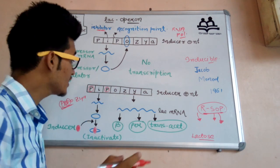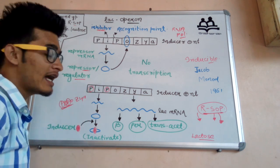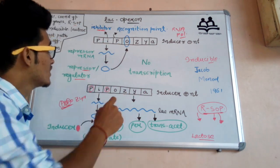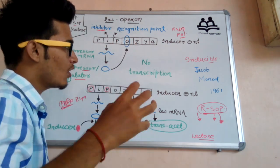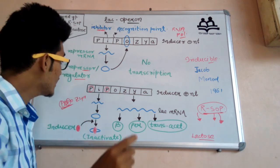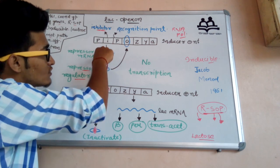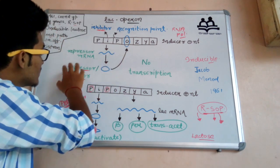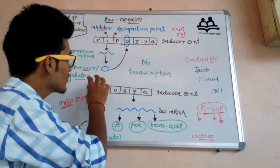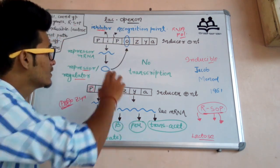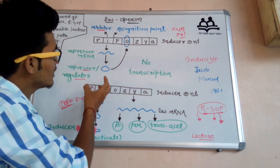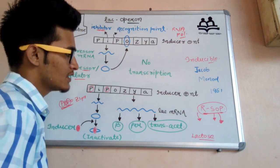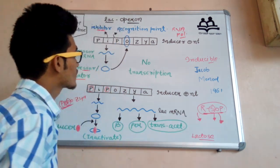The I gene is also known as the regulator gene. It synthesizes a protein known as repressor protein or regulator protein. Since it synthesizes the regulator protein, this particular gene is known as the regulator gene. The O gene is the operator gene. The repressor or regulator protein synthesized from the I gene goes and binds to the operator gene.